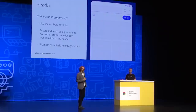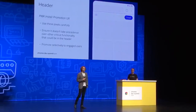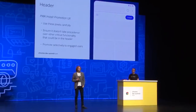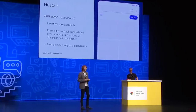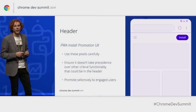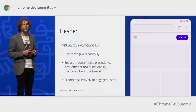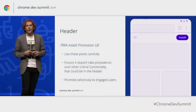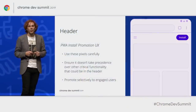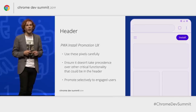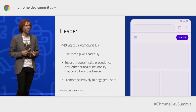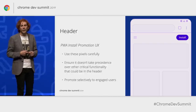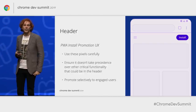The header can be a good place to promote install of your app, but you need to be careful — these are really precious pixels. Use information architecture and A/B testing to determine whether it makes sense to have an install option in the header. For some apps this will be a clear and obvious win, for others it would be completely inappropriate — it really depends on your use case.